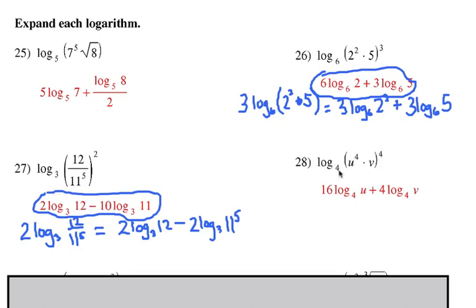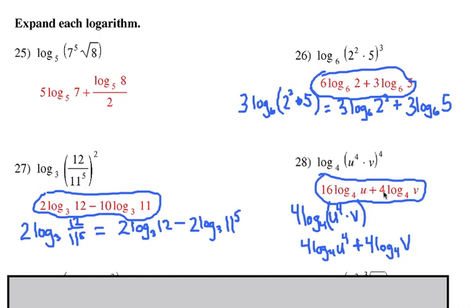Number 28, log base 4 of that. The outside 4 exponent gets in front, so now it's 4 log 4 of that product. Then we split it up because of the product here, so it's going to be 4 log 4 of u to the fourth plus the same thing for log 4 of V. Here's the product, and it splits it up and becomes an addition problem. Now this exponent here can be moved to the front, and now it becomes a 16 in the front, so now we have 16 log 4 u plus 4 log 4 v.